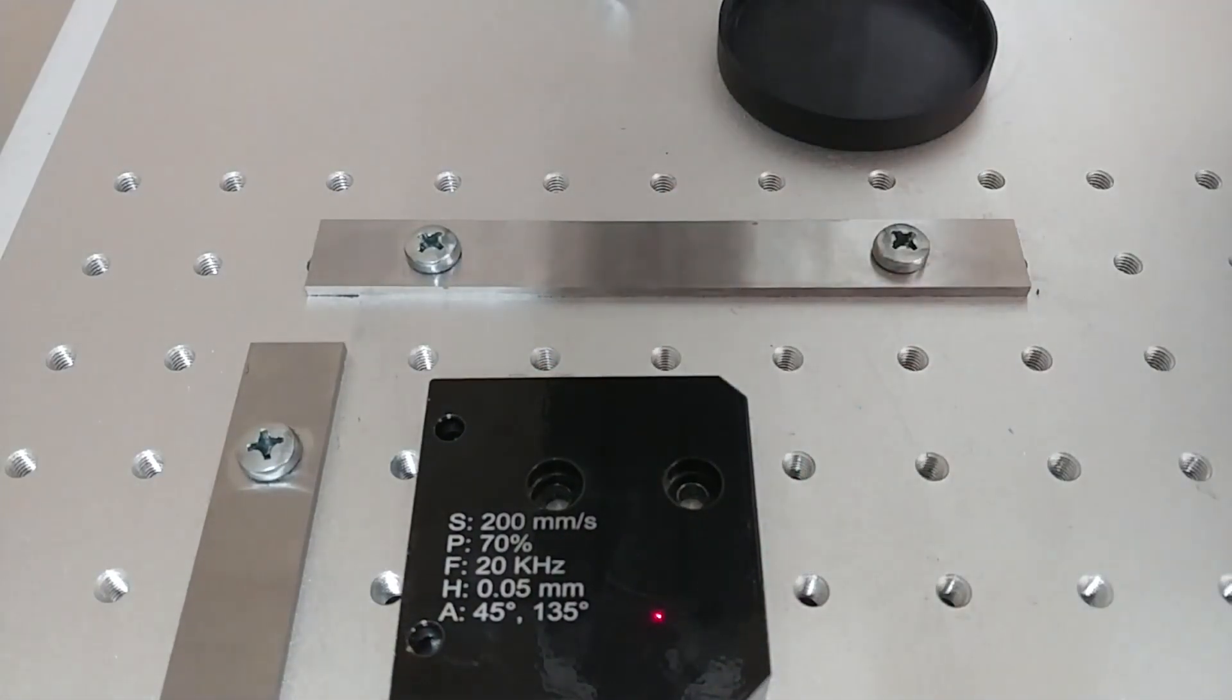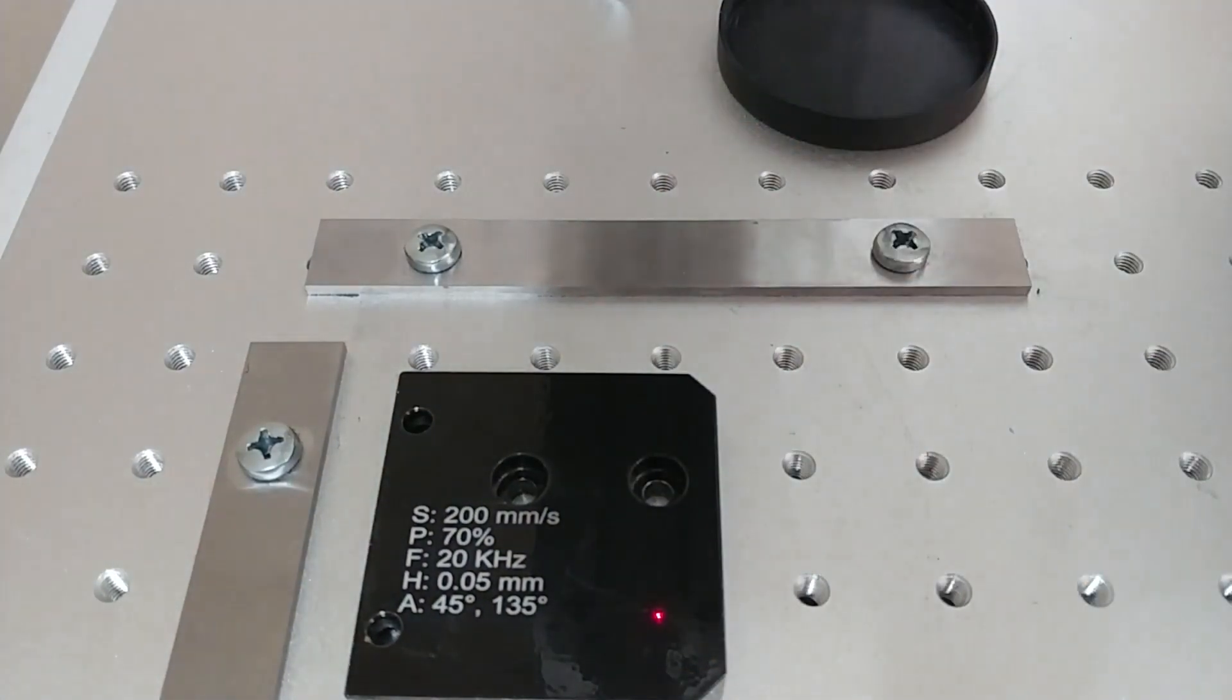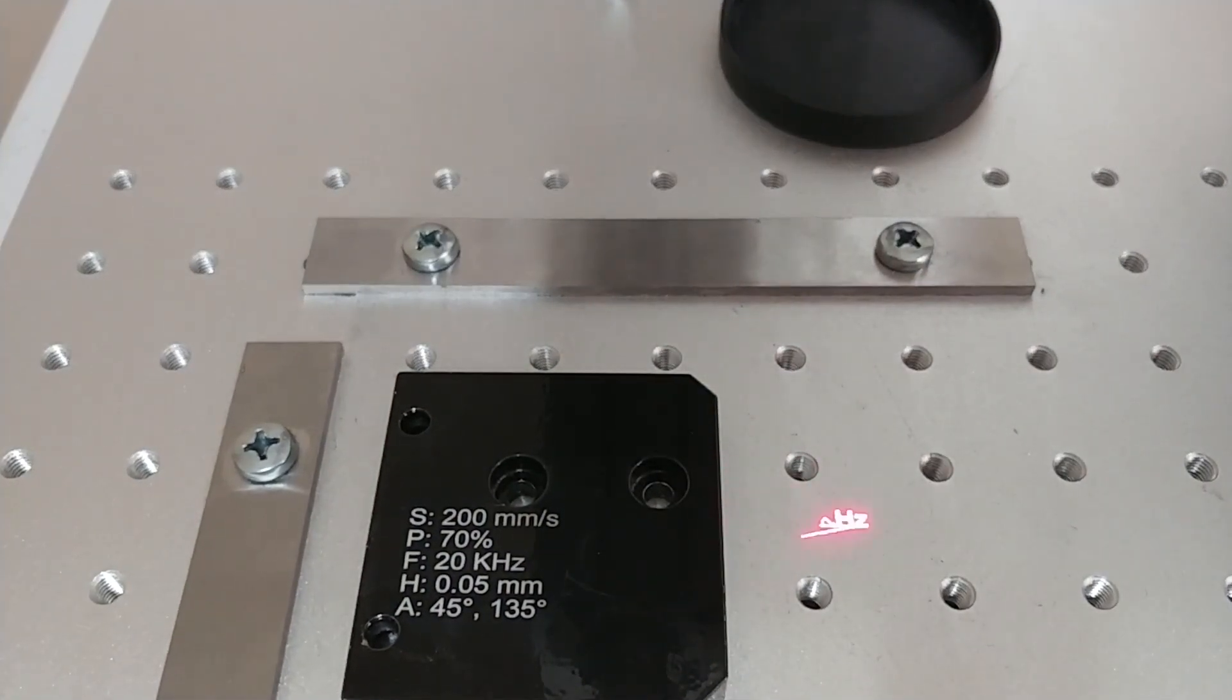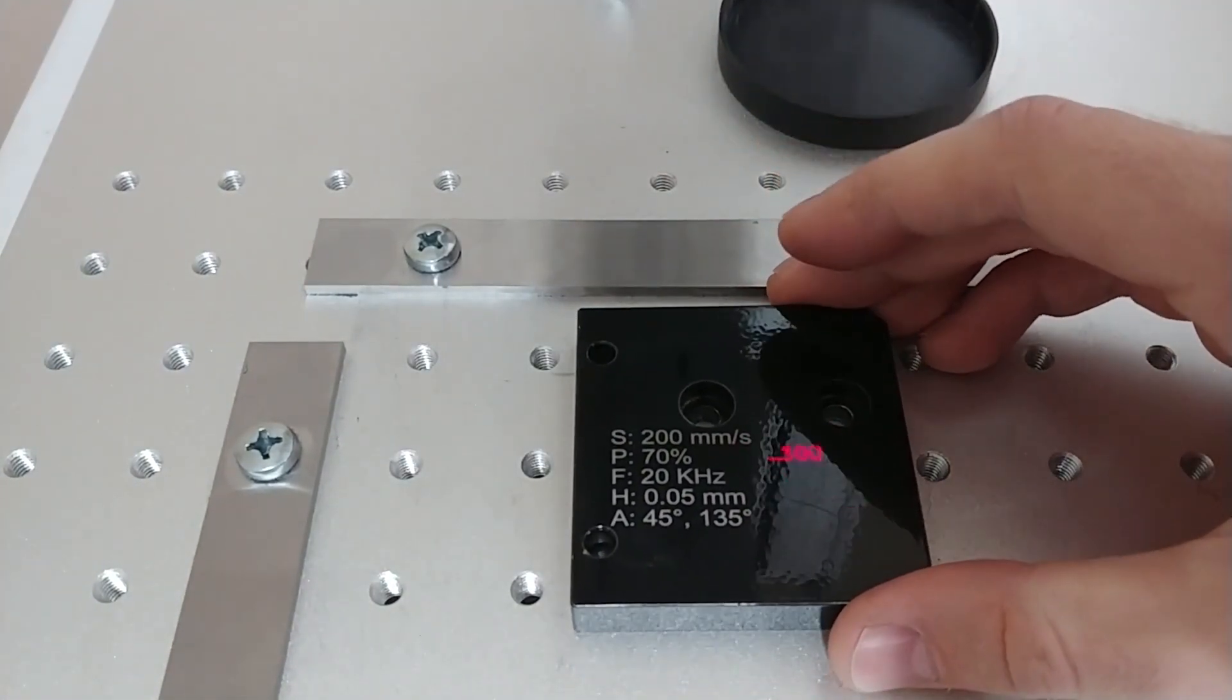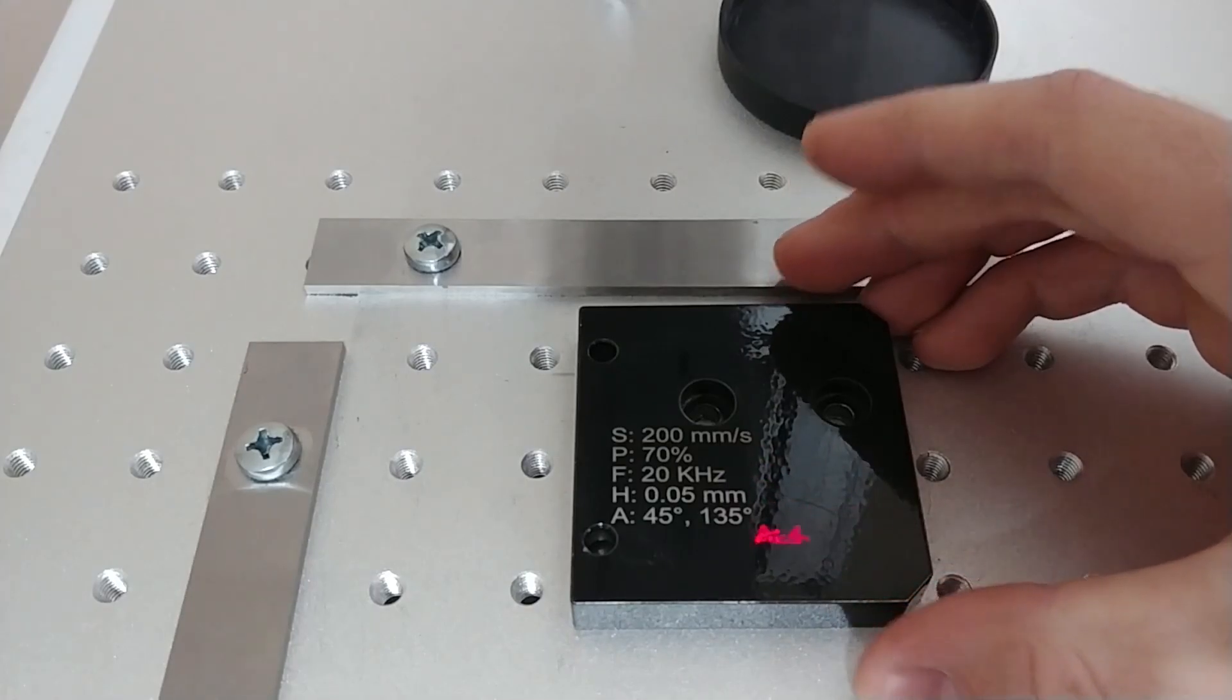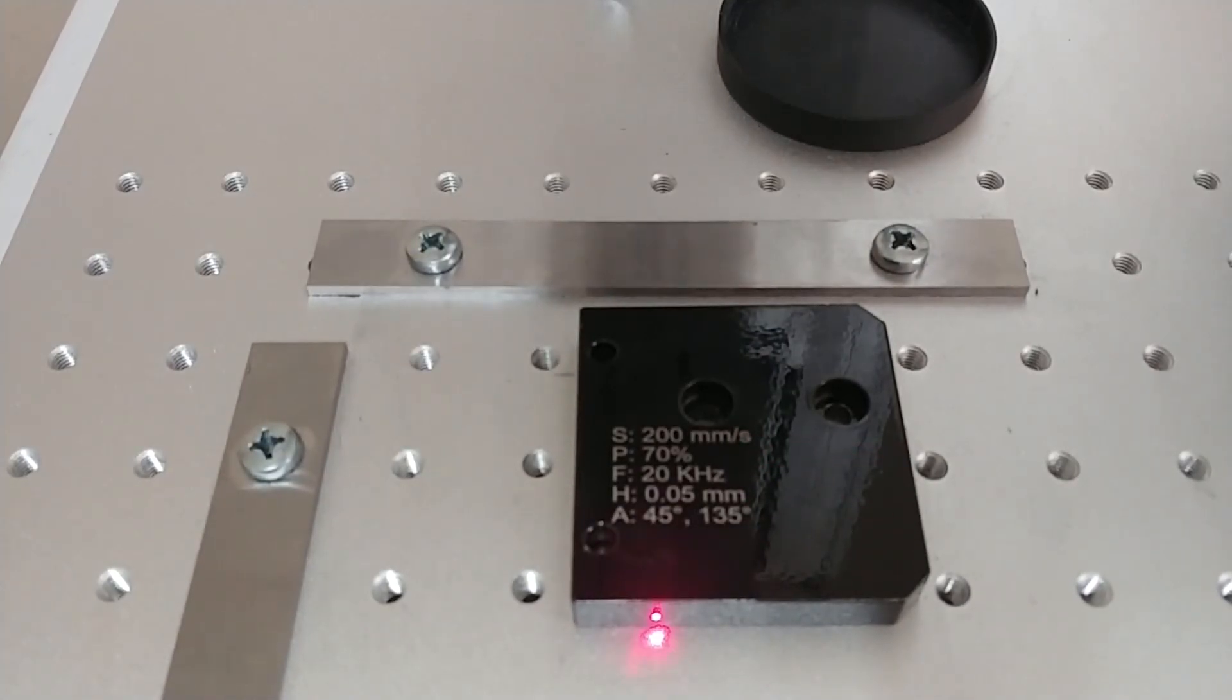Well, right next to it let's do the other mark. So this is going to be faster, 1000 millimeters per second, 30 power, I think we're not going to get through the powder coat. Let's see if I can fit it all on there. Way over here, I think that'll fit. So we're not changing the hatch, we're not changing the angle. Let's do it.